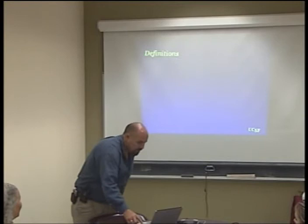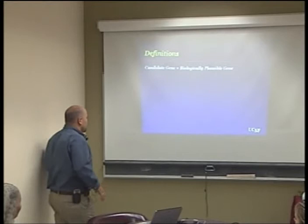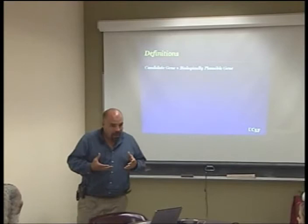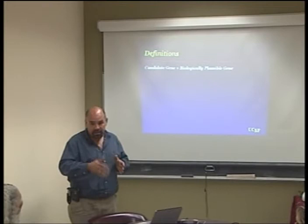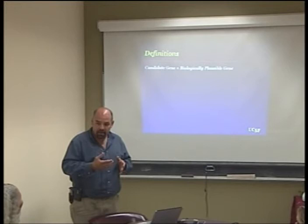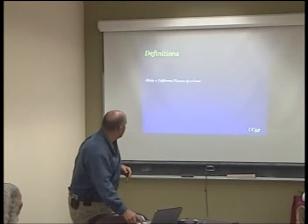Recognizing that not all of you understand a lot about genetics, I want to explain some terminology. A candidate gene is a gene that makes biologic sense for a disease. For asthma, a gene that makes good sense is interleukin-4, because we know about its biologic behavior and that genetic variation in that gene could change the way it behaves, potentially playing a role in the disease.